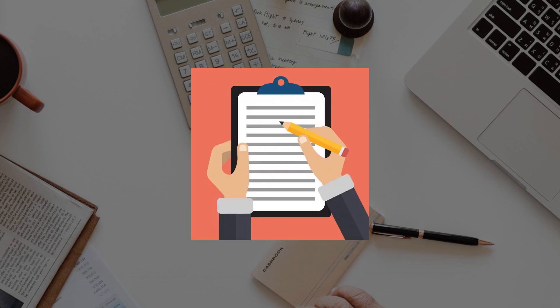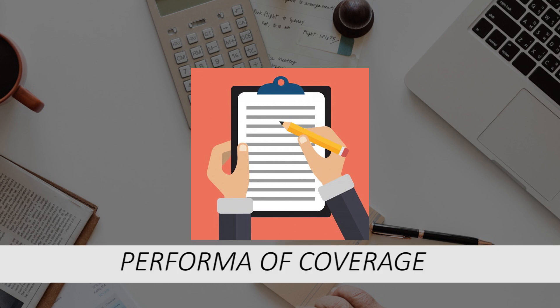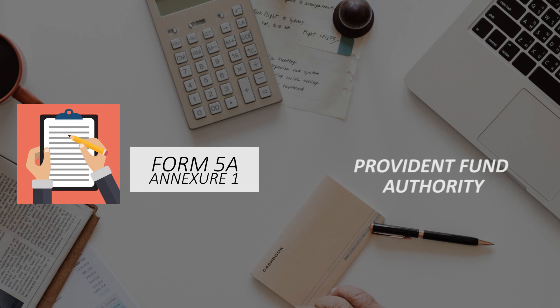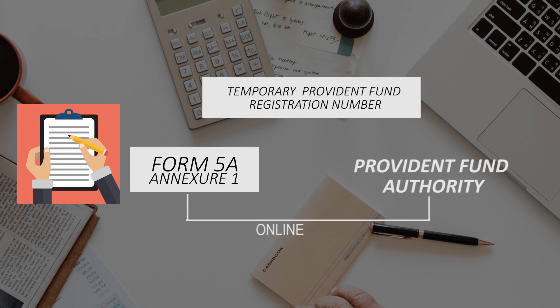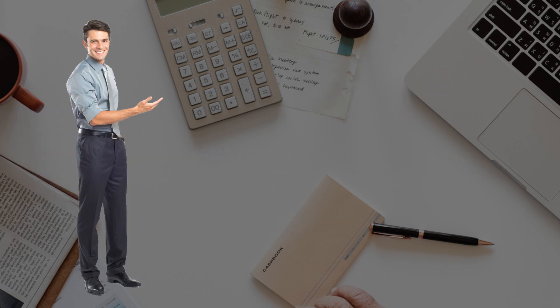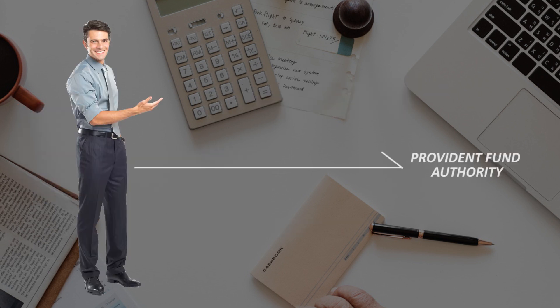Let us also see the registration process. There is a detailed application form called the proforma of coverage, then Form 5A with Annexure 1 — all of these have to be filed online. After filing, a temporary provident fund registration number will be allotted. Following this, the employer should submit all documents online.